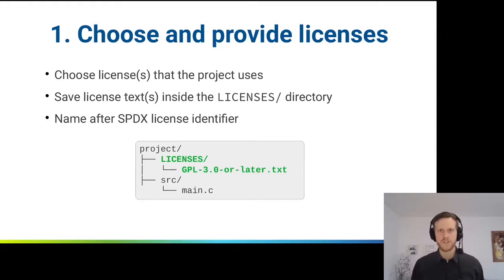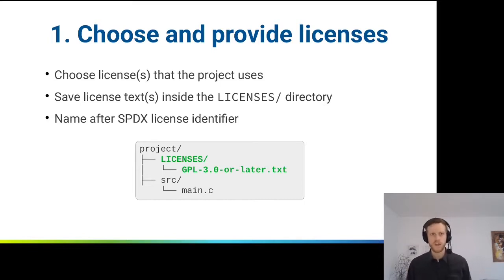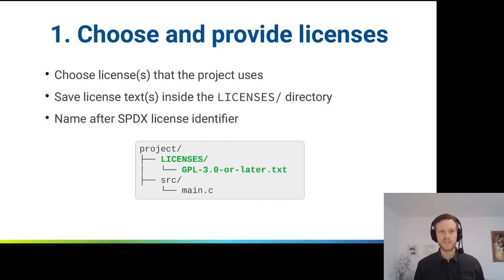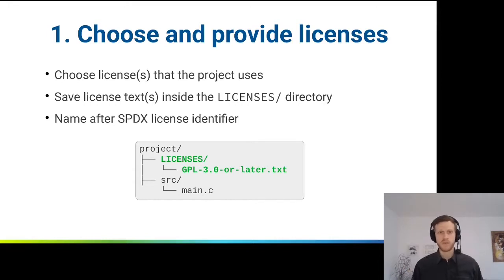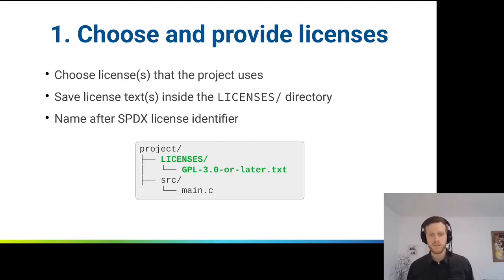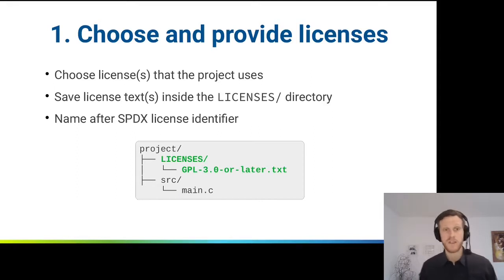Let's look at these steps individually. The first one is to choose and provide licenses. We ask people to use a license — we recommend free software licenses, but in theory every other license could work as well. The idea is to save license texts inside the LICENSES directory. This is a directory REUSE invented, because before there were so many different ways to store multiple licenses in a repository. Everything goes inside the LICENSES directory, named according to their SPDX license identifier, so everyone knows where to find the license text for any license in the repository.